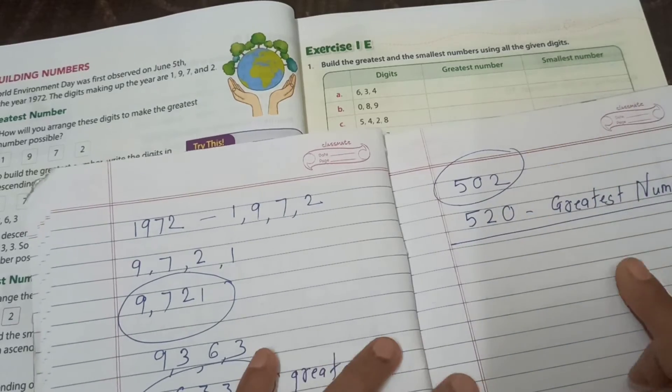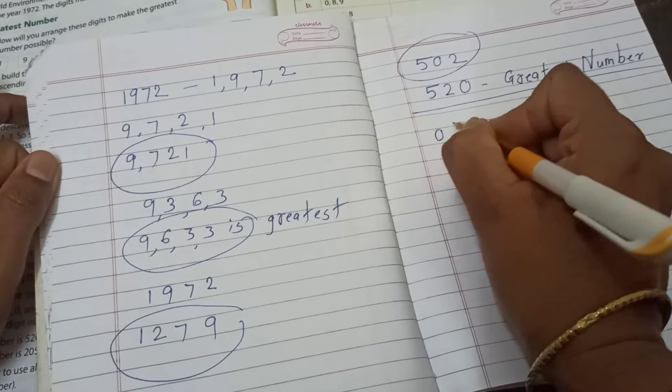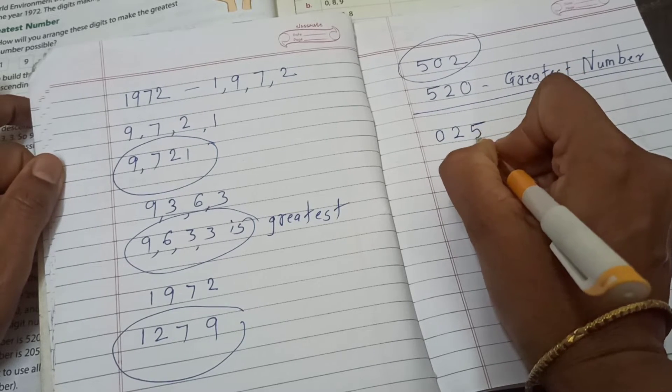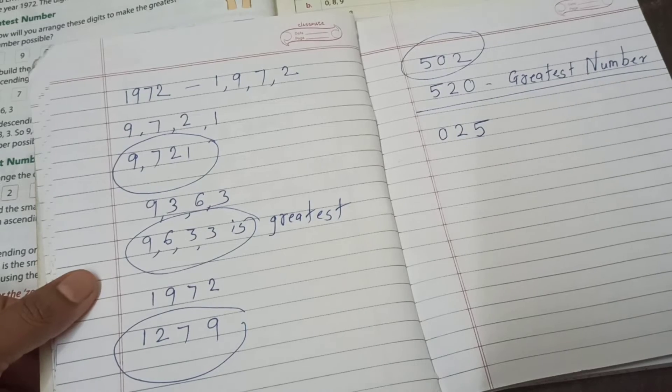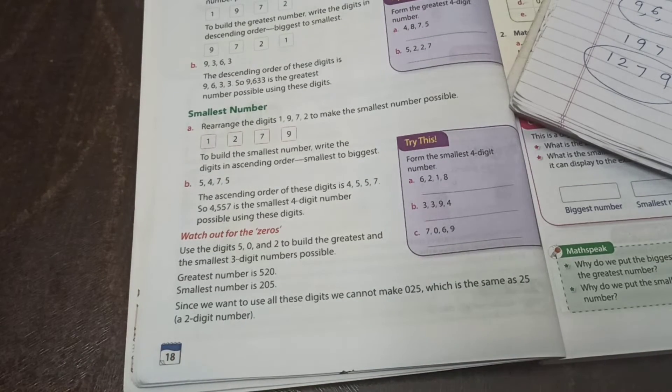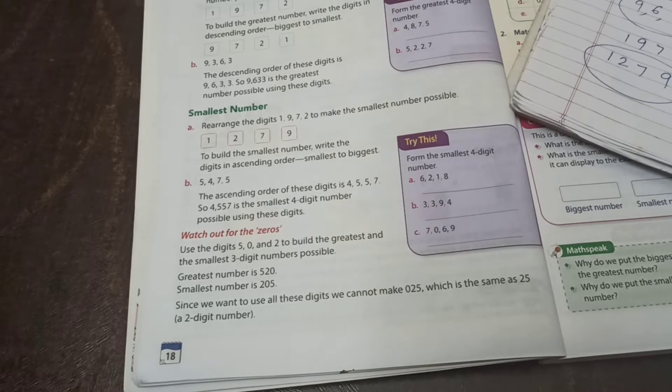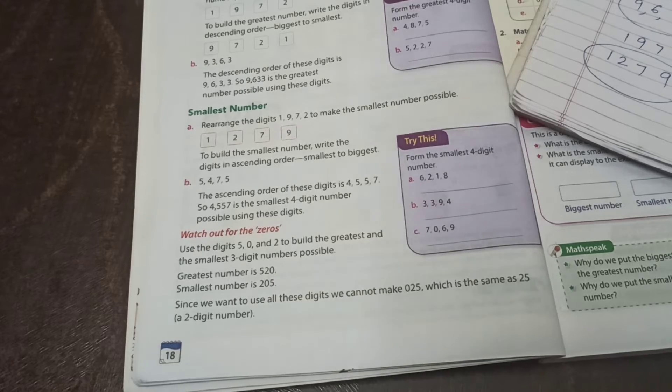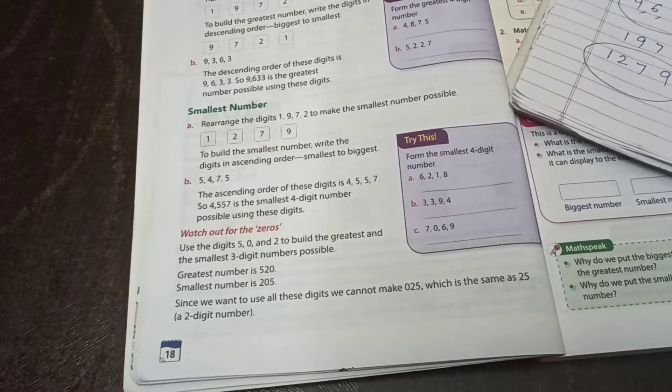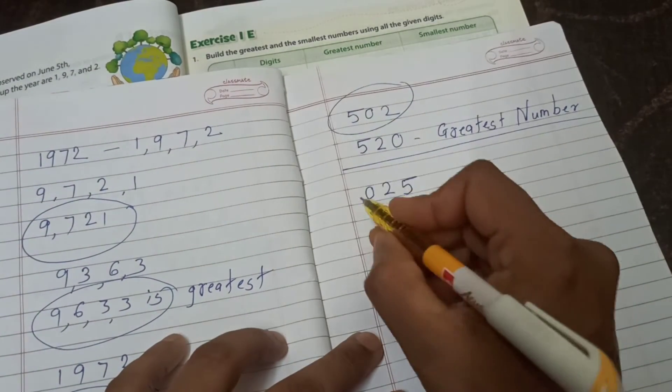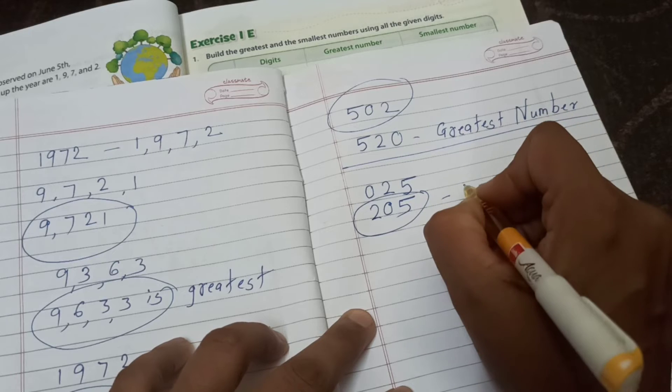Using 3 digits, we want smallest number. Then ascending form. First one 0, then 2, then 5. Means we got 25. But kids, our textbook saying 0 means nothing. Obviously we know. So don't use first 0. Means since we want to use all the digits, cannot make 0, 2, 5. Because 0, 2, 5 means only 25. So which is correct? 2, 0, 5. Means 205. This one smallest number.